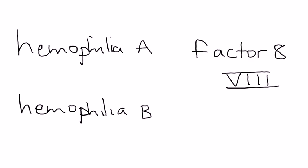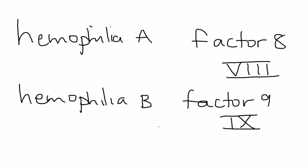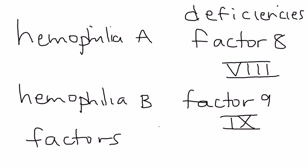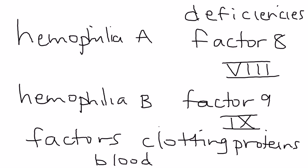Hemophilia B is a deficiency in factor IX. What are these factors? Well, factors are basically clotting proteins, and these clotting proteins help with coagulation. They participate in blood coagulation.